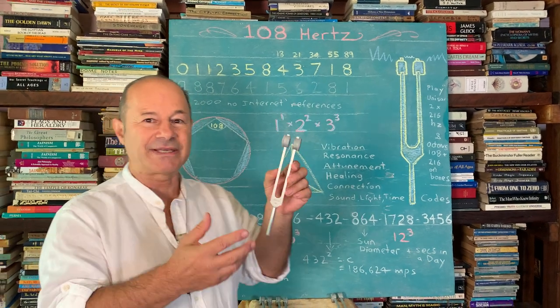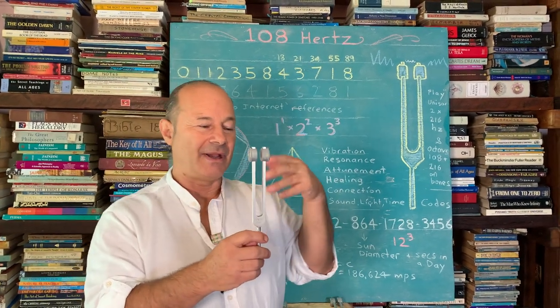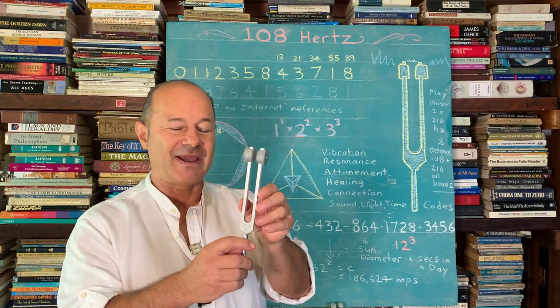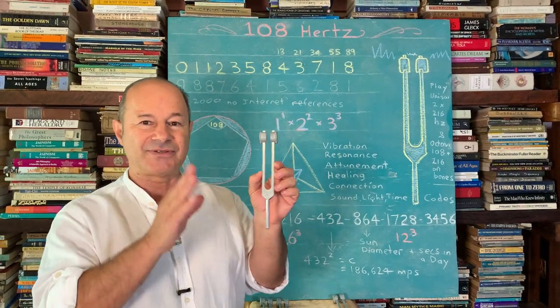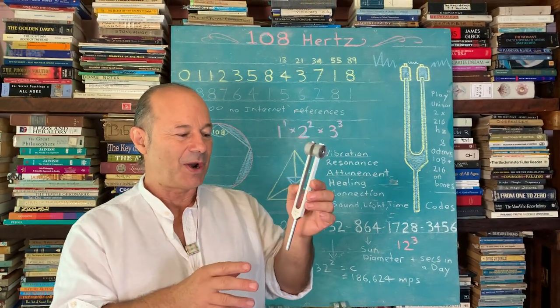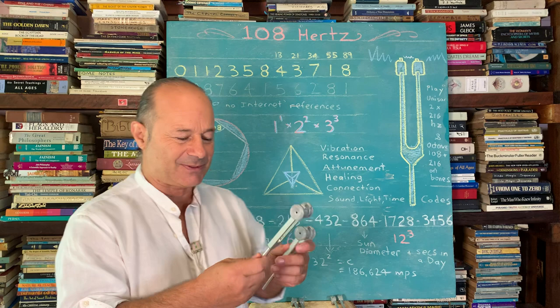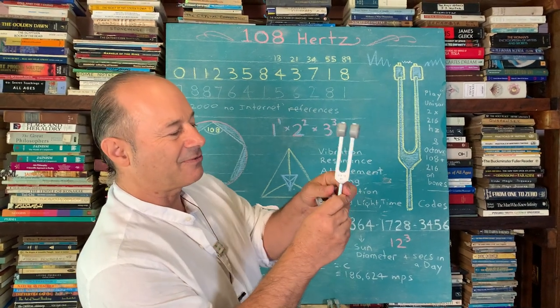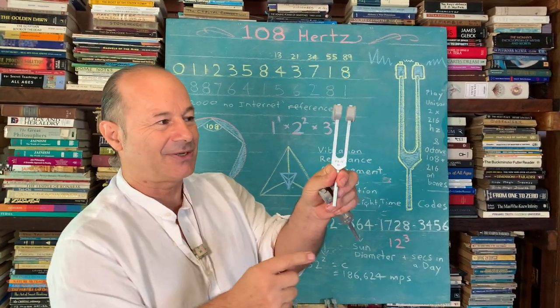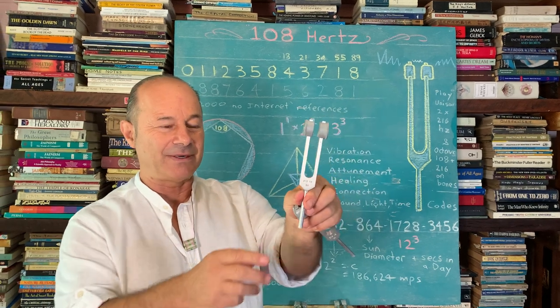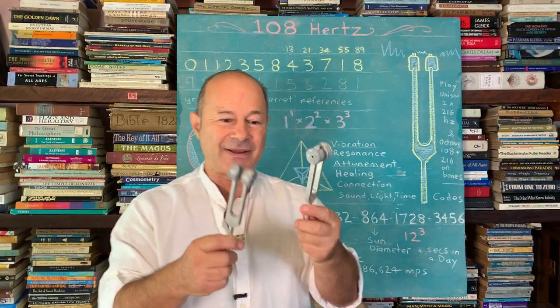The next level is called the octave. If I wanted to work with the octave of 108, I have to double it—the octave is the 1:2 ratio. Double 108 is 216. This one here says 216 Hertz, so it's a bit shorter than the other one.